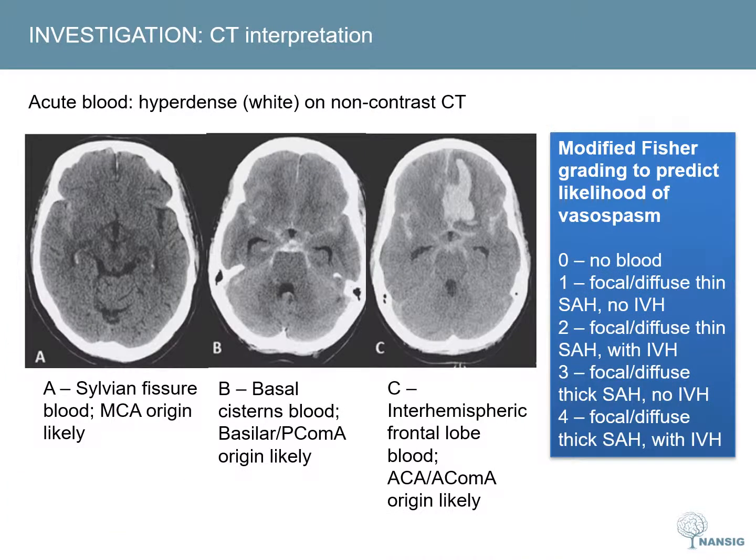The volume of subarachnoid haemorrhage on CT is an indicator of the likelihood of developing symptomatic vasospasm. This has been quantified by the modified Fisher grading system. 25% of patients will have more than one aneurysm, and the distribution of blood is very helpful in determining which aneurysm has bled, to allow the ruptured aneurysm to be targeted and secured to prevent further haemorrhage.